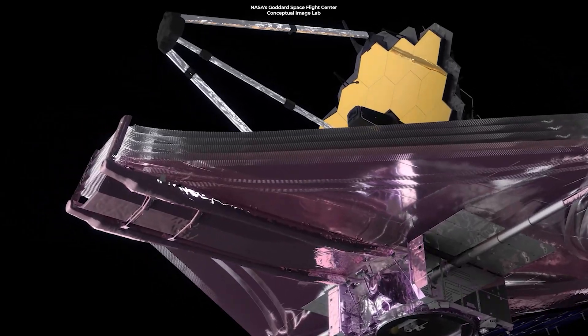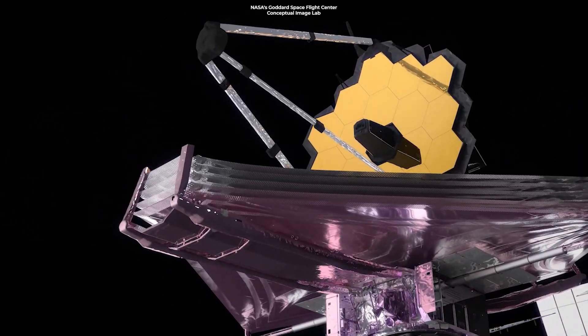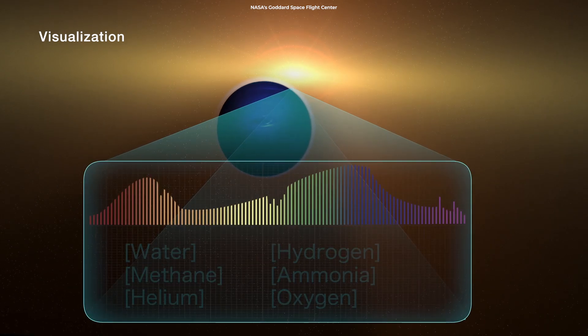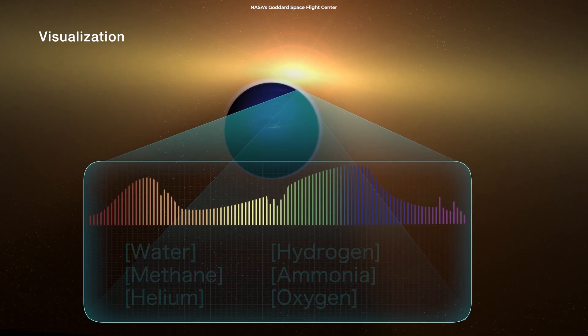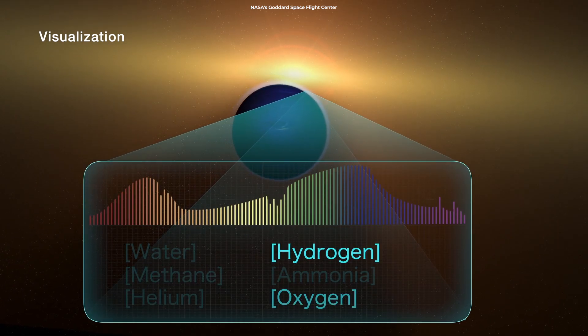This method can be used to recognize the presence of certain atmospheric gases that are associated with life, such as oxygen or methane, because these gases leave very specific signatures in light.